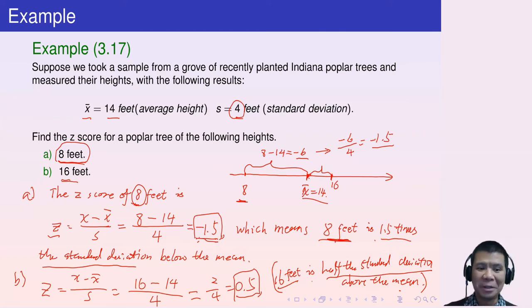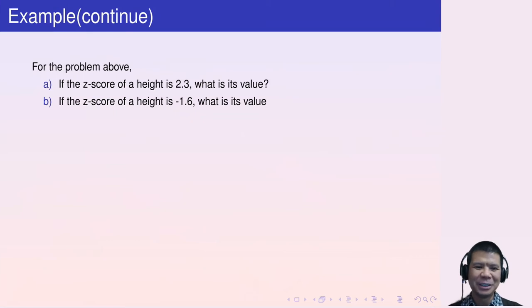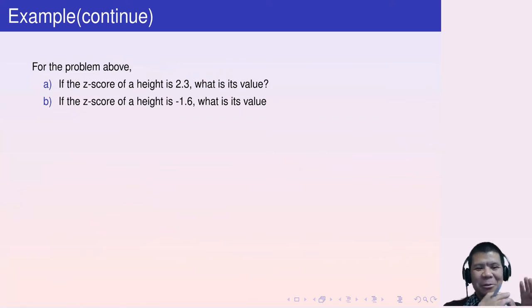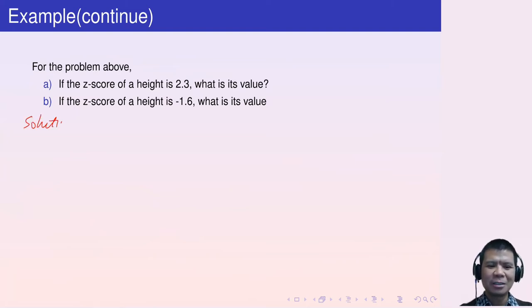Now, what about the other way around? If I give you the z-score, can you find the actual value? For the problem above, if the z-score of the height is 2.3, what is its value? I know the z-score — can we find the x value? Let's see how to solve this.